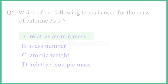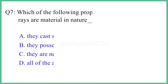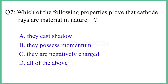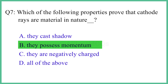Question number 7. Which of the following properties proves that cathode rays are material in nature? The right answer is option B: they possess momentum.